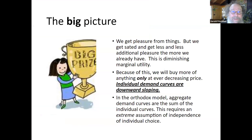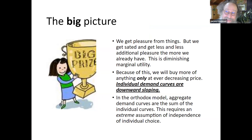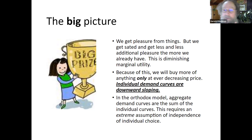Big picture: we get pleasure from things — that's why we buy them. But we get sated. We're not getting too much into the source of the pleasure, but we do get sated as we have more and more, and we get less and less additional pleasure the more we already have. This is diminishing marginal utility.